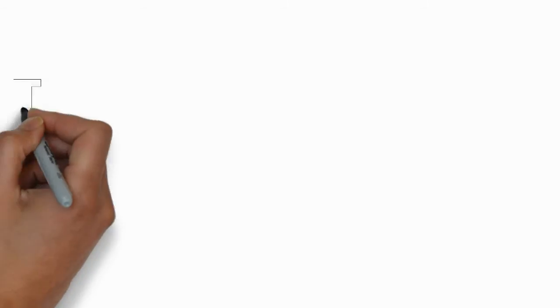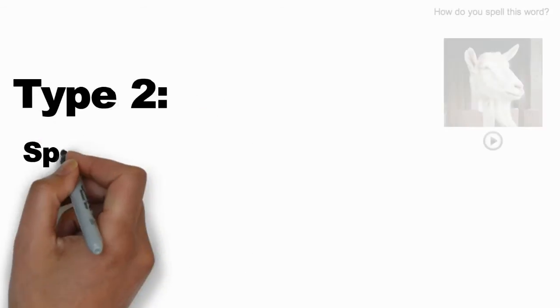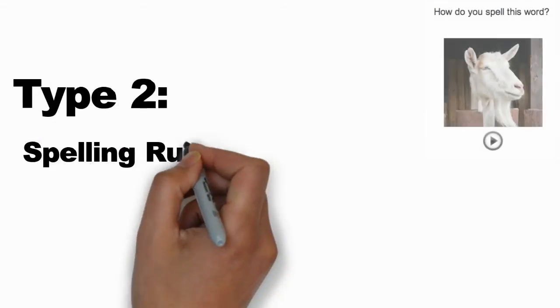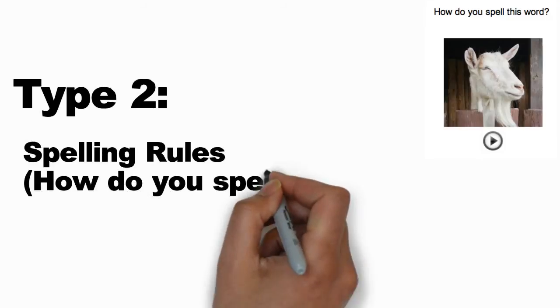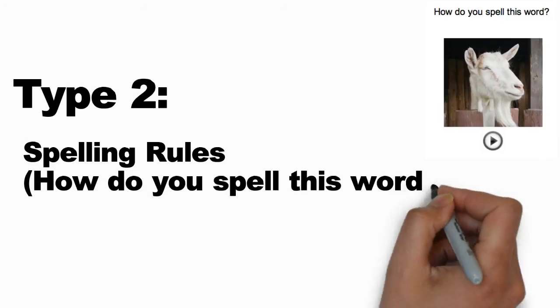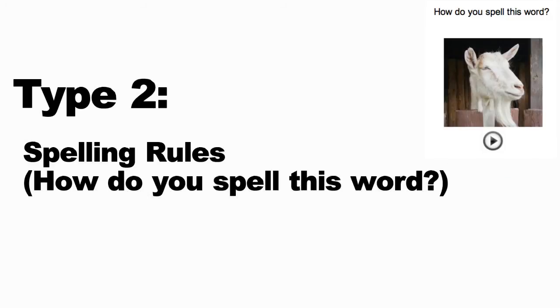The second type of flashcard is the inverse of the first. You'll hear a recording of a word you've already encountered — in this case CHEVRE — and you're going to try and remember how to spell it. This will help ingrain your language's spelling rules in the context of real words.